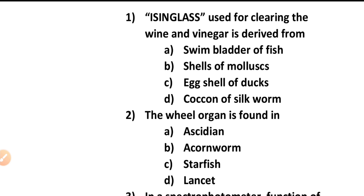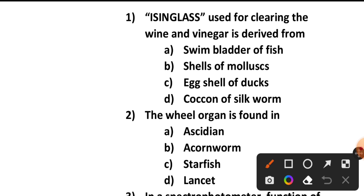Question number one: Isinglass is used for clearing wine and vinegar. It is derived from — swim bladder of fish, shells of mollusks, egg shells of duck, or cocoon of silkworm. The answer is option A, that is swim bladder of fish. Isinglass is derived from it, which is used for clearing wine and vinegar.